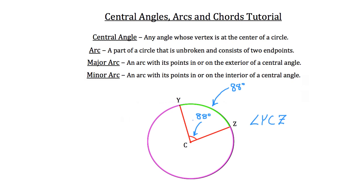Again, if this central angle down here were 105 degrees, then the arc that we're referring to — in this case Y, Z — would be 105 degrees as well. Now, when you're given the central angle, you can actually solve for the major arc and the minor arc.